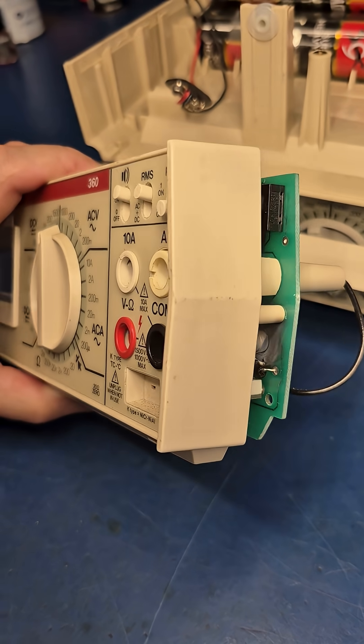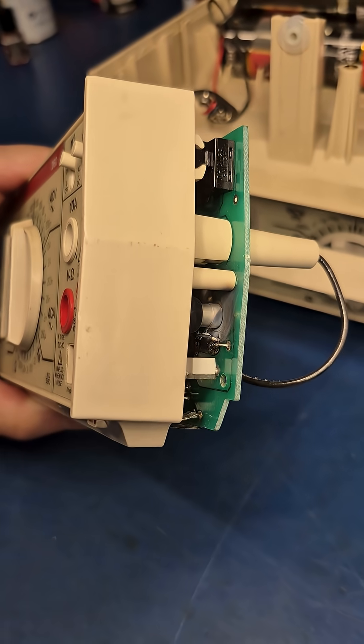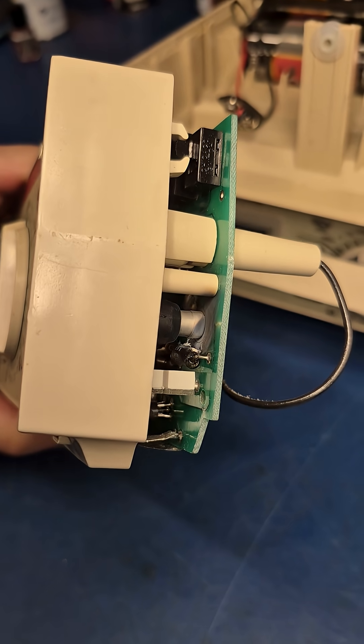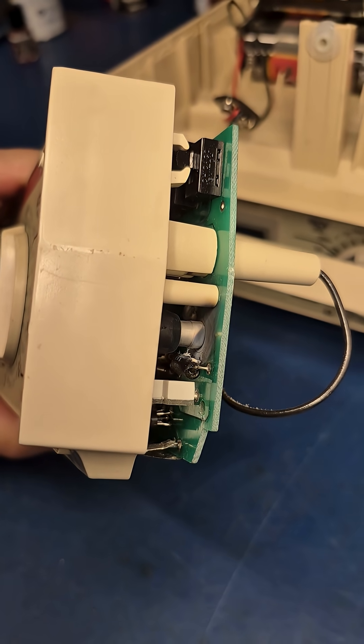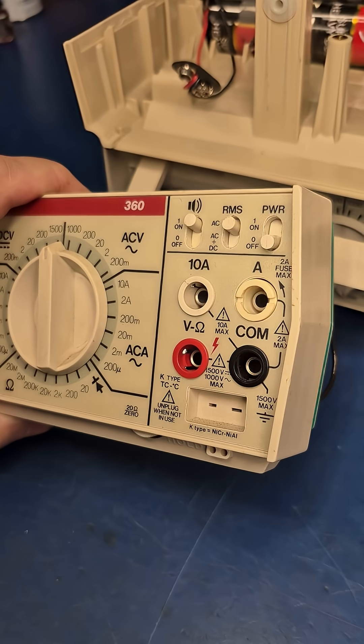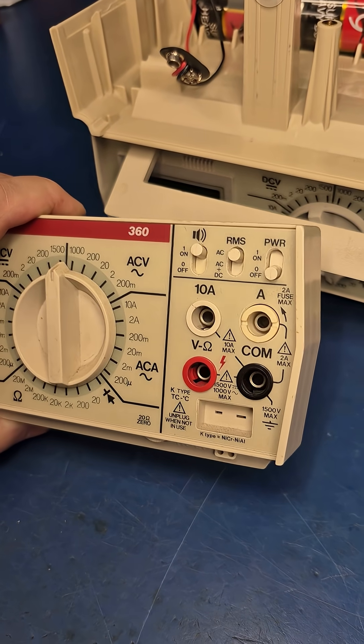So I pulled the front panel off of the Beckman and I could already smell that burnt electrical odor. Looking down there by the negative post, you can see she's been doing some arc welding. Obviously somebody had exceeded the input voltage to this meter, or there was contamination.